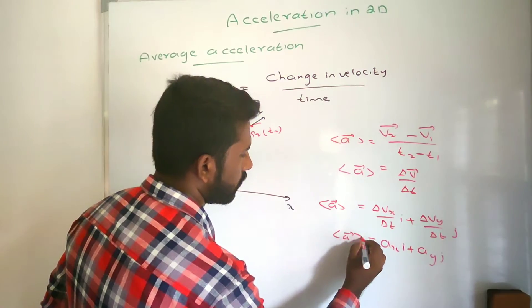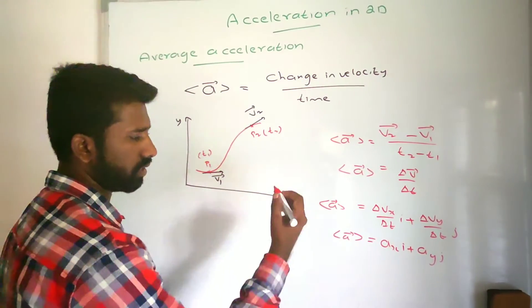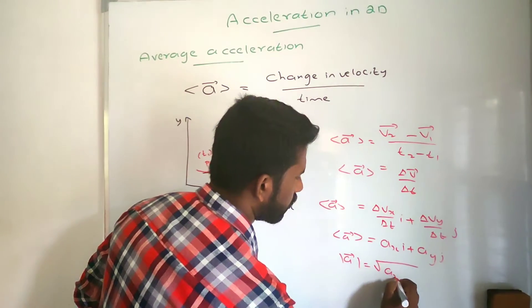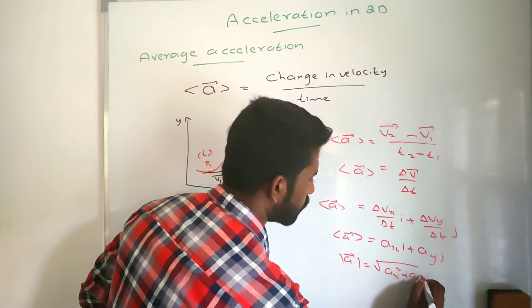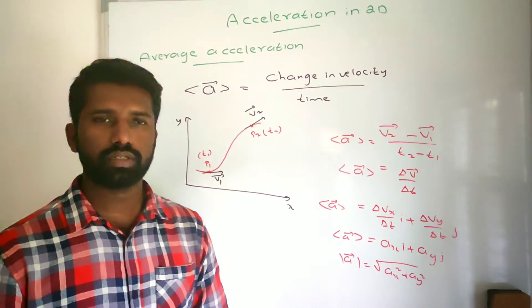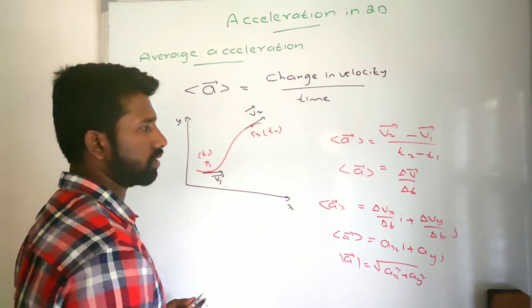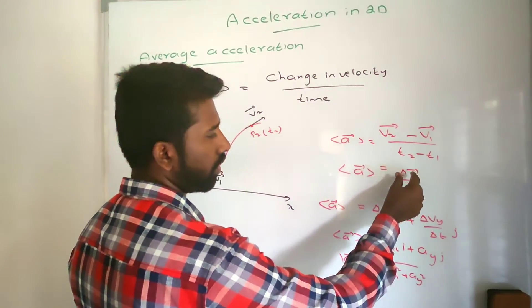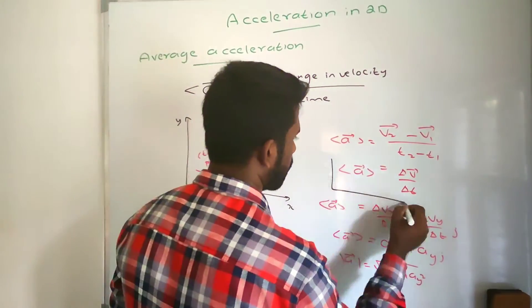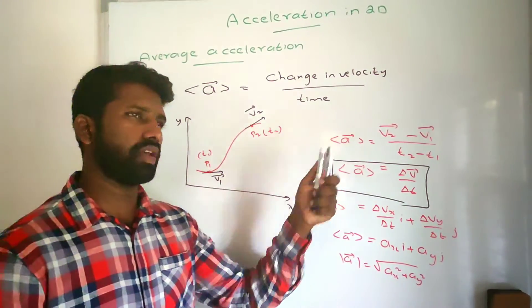We can find the magnitude of the average acceleration as the square root of Ax squared plus Ay squared. The direction of the average acceleration is the same as the direction of delta V. From the diagram, we can say that the change in velocity and average acceleration are in the same direction.